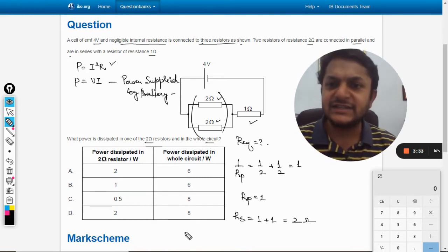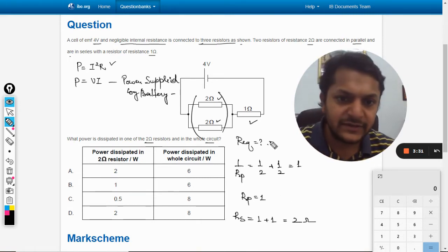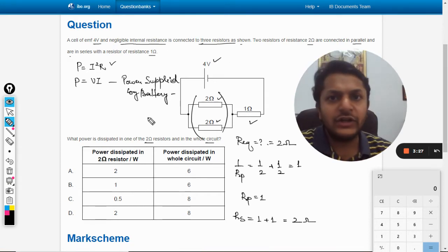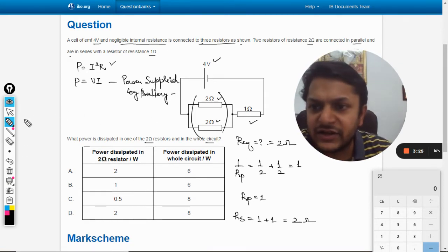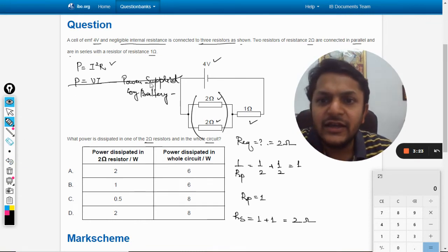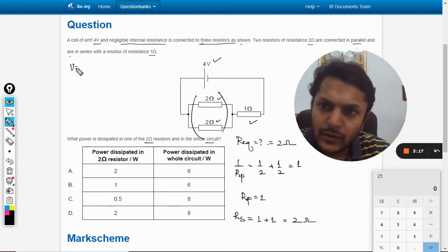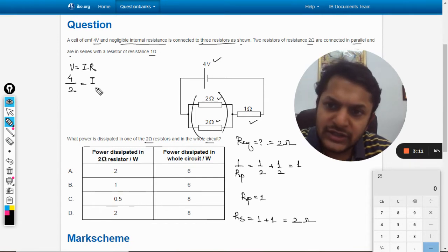So 2 ohm is the total resistance, that is R equivalent. 4 volt is the battery that is applied, so what is the current now? We can say V = IR. The voltage is 4 and the resistance is 2, so it is coming out to be 2 ampere.